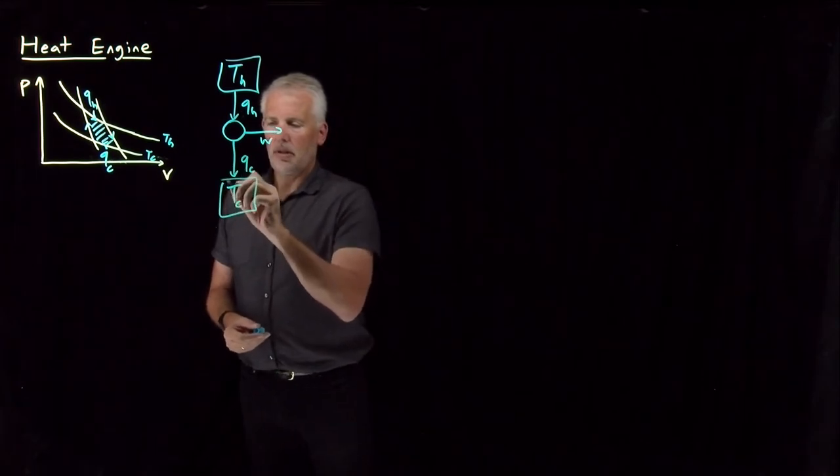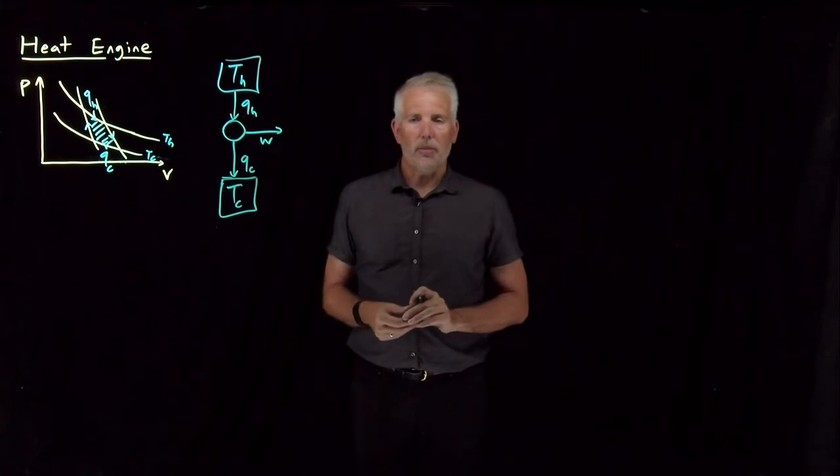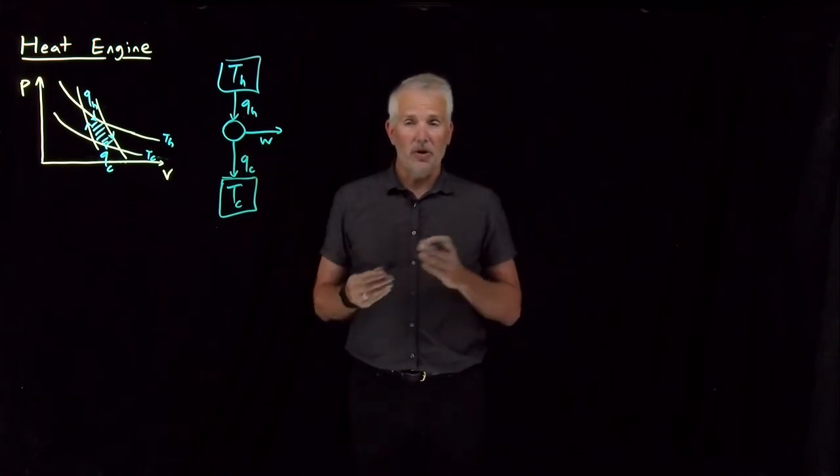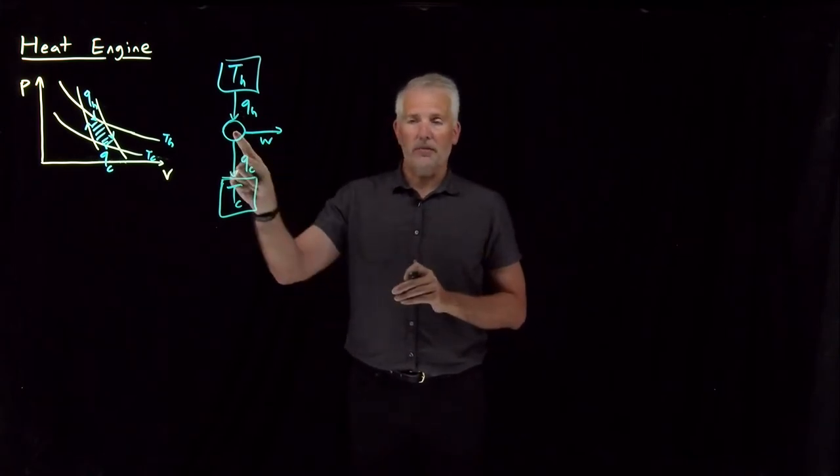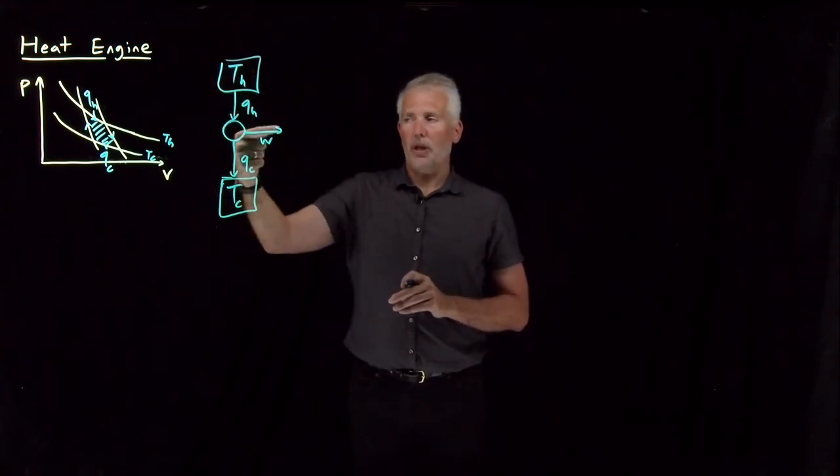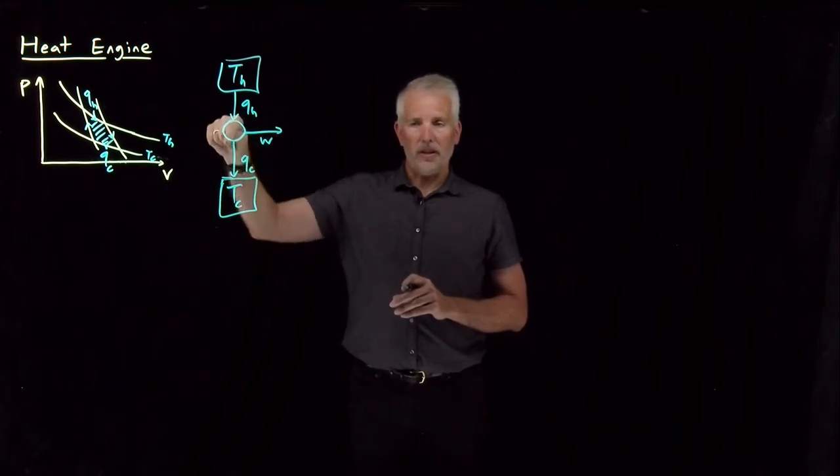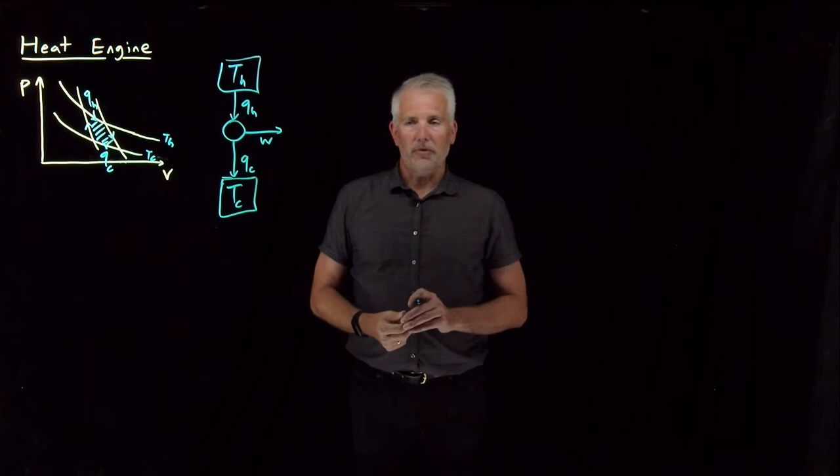When I give it back, I'm doing that at the colder temperature. The arrows on this diagram are meant to indicate the signs of Q or W, or the direction of the energy flows into or out of the system. When Q is positive, energy is flowing into the system. When W or Q is negative, the system is either doing work on the surroundings or energy is flowing out of the system in the form of heat.